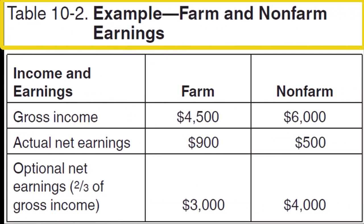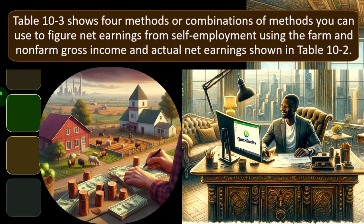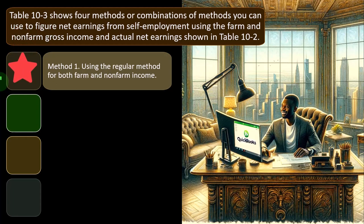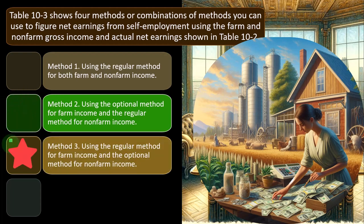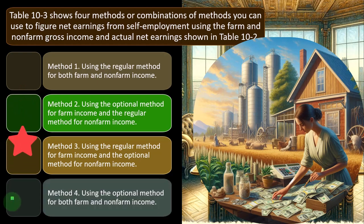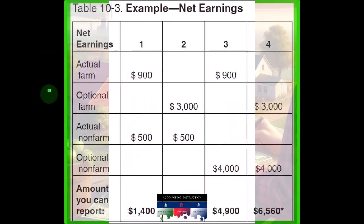Table 10-2 shows an example of farm and non-farm earnings, with gross income, actual net earnings, and optional net earnings — two-thirds of gross income — for both farm and non-farm. Table 10-3 shows four combinations of methods to figure net earnings: method one uses the regular method for both farm and non-farm; method two uses the optional method for farm and the regular method for non-farm; method three uses the regular method for farm and the optional method for non-farm; and method four uses the optional method for both.